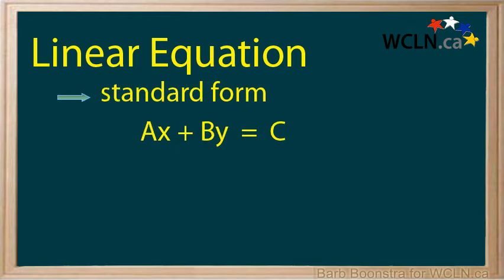The standard form looks very much like the general form, except the final constant stands alone on the right side of the equal sign. Again, a, b, and c must be integers. This form is sometimes called the general form in some sources.